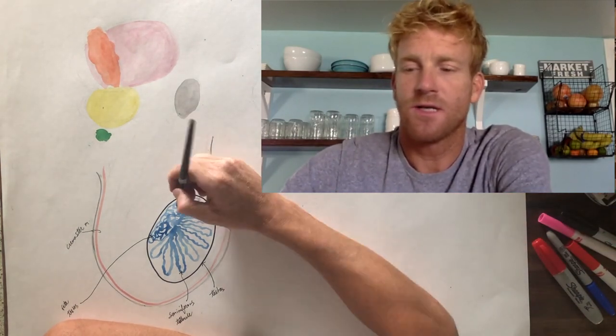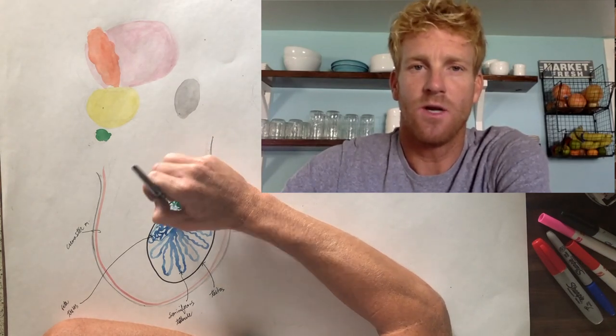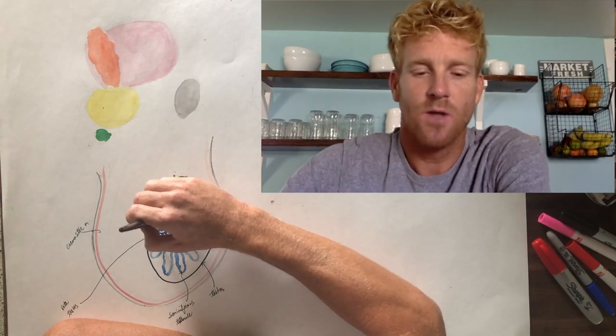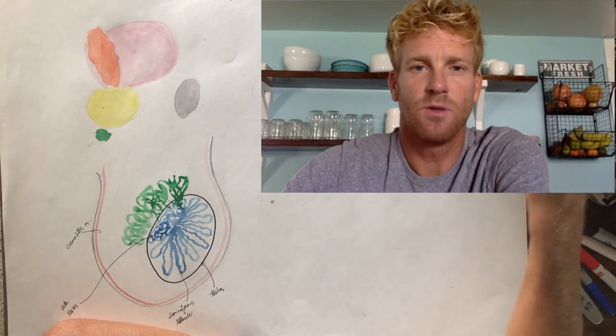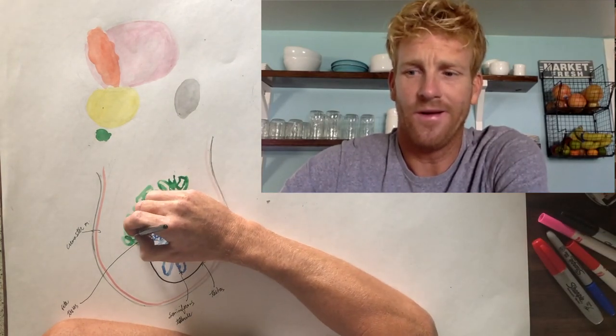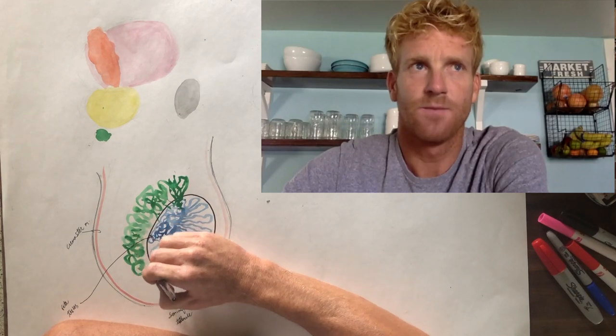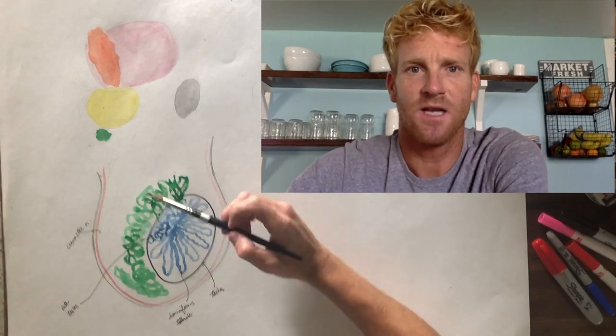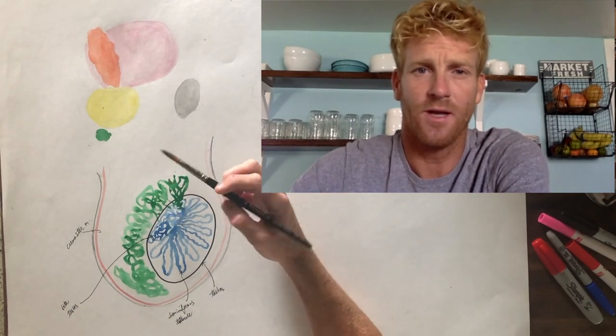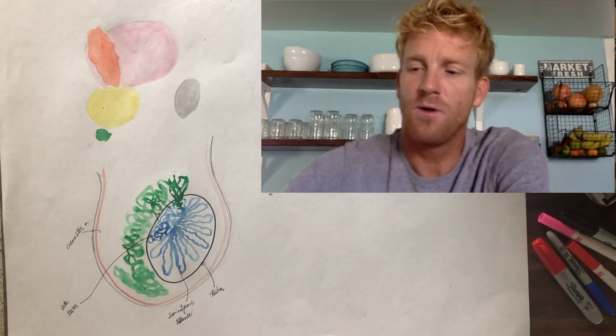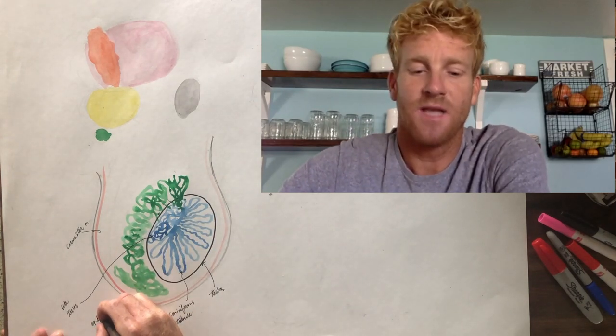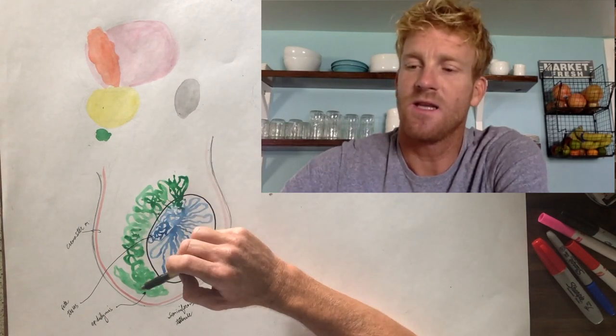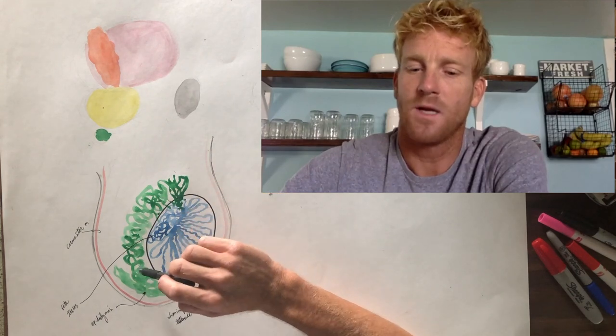After they flow through the rete testis, they're actually going to emerge from the testes, and they're going to enter into another very twisted up long tube called the epididymis. Now, I drew the seminiferous tubules and the rete testis in blue. This epididymis is going to be drawn in green. The epididymis is going to emerge from the rete testis, and it's going to be a coiled up tube that passes along the posterior side of the testes and goes downwards or inferiorly all the way down underneath the testes on the backside. The epididymis has three different parts: it's got the head up top, the body which goes behind the testes, and then the tail which is at the bottom. It's a very coiled up tube.